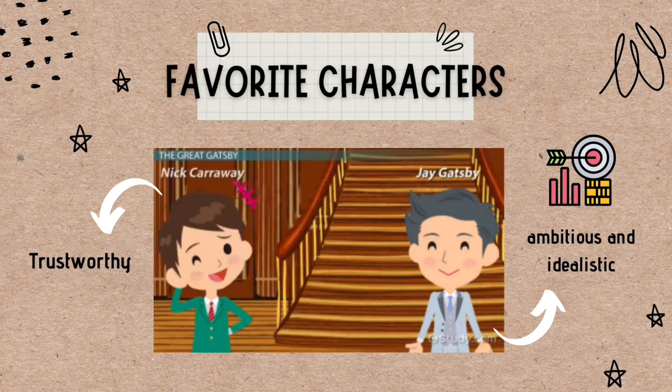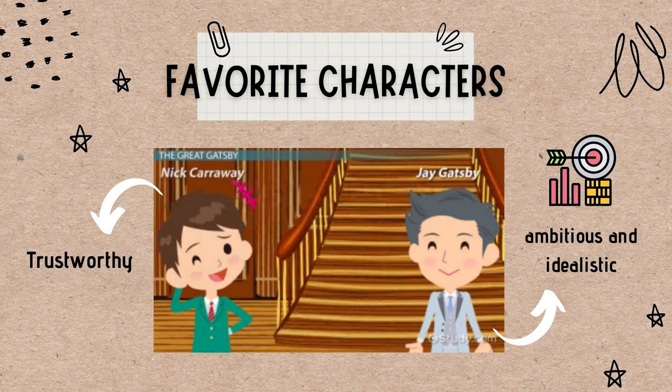In this novel, there are two favourite characters that we like, which are Nick Carraway and Jay Gatsby. The reason we like Nick Carraway is because he is a trustworthy person. Nick frequently acts as a confidant for people who have troubling secrets without telling other people. We chose Jay Gatsby as our favourite character because he is an ambitious and idealistic person. Gatsby personifies the self-made man — a shy young millionaire who ascended from humble beginnings in the American Midwest to fame among Long Island's elite. He is obsessed with the object of his affection, particularly Daisy, his long-standing love.